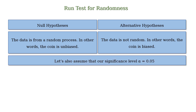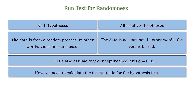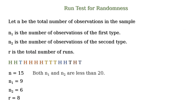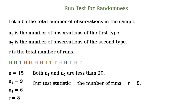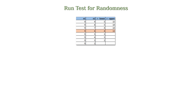Now let's look back at our example. The null hypothesis is that the data is from a random process — in other words, the coin is unbiased. The alternative hypothesis is that the data is not random — in other words, the coin is biased. Let's also assume the level of significance alpha is 0.05. In our case, both n1 and n2 are less than 20, so our test statistic is equal to the number of runs, r, which equals 8. We will look at the run table to find the critical value. n1 is the number of heads, equal to 9, and n2 is the number of tails, equal to 6.